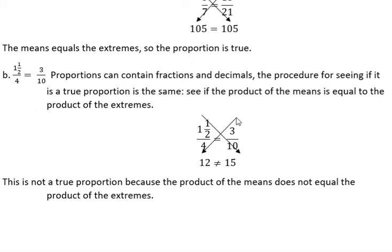So using the same method as before, I'm going to do the means, 3 times 4, which is 12, and the extremes, 1 and a half times 10, which is 15. Those do not equal, so this is not a true proportion because the product of the means does not equal the product of the extremes.